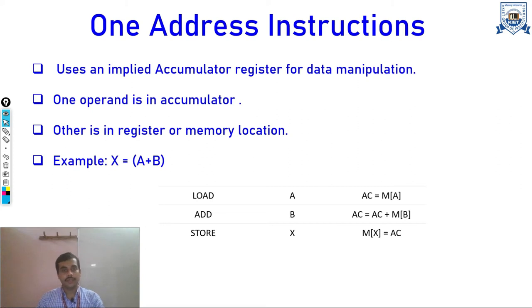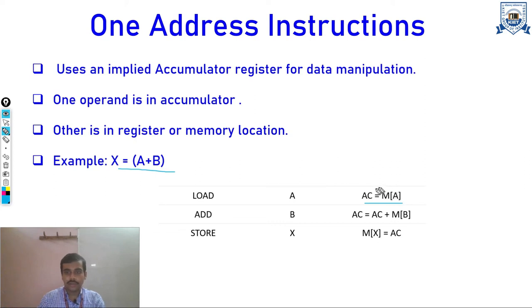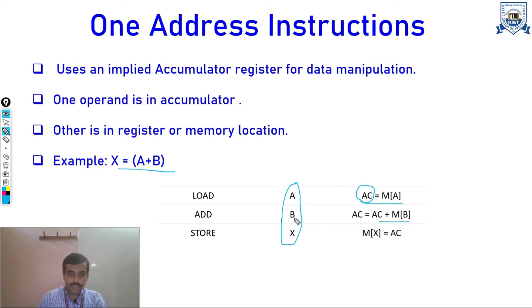The next instruction format is one-address instructions, in which we use the accumulator implicitly for data manipulation. Implicit means the machine already knows the accumulator holds one operand, so the other operand is stored in either a register or a memory location. For X = A + B, we first load the value of A into the accumulator, then add B to it, with the accumulator serving as the implicit first operand.